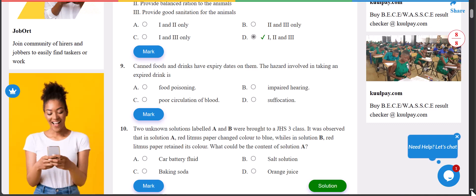Number nine: which reads canned foods and drinks have expiry date on them. The hazard involved in taking an expired drink is food poisoning. If you take any expired product it's going to lead to food poisoning.